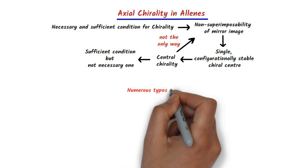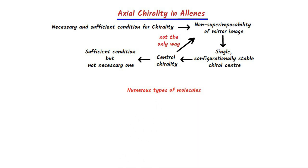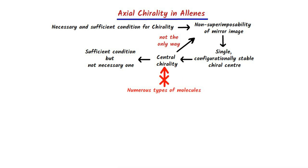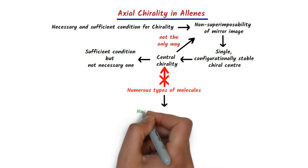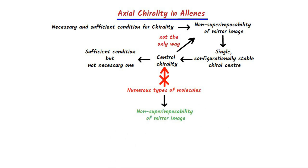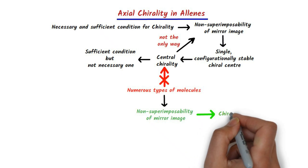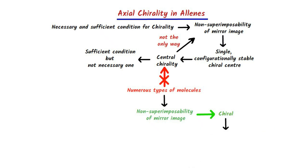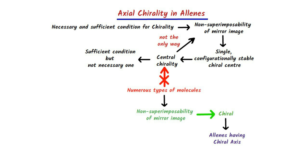Because there are numerous types of molecules which do not possess central chirality, but still show non-superimposability of the mirror images, and are thus chiral. For example, allenes having a chiral axis show chirality without having central chirality in the molecule.